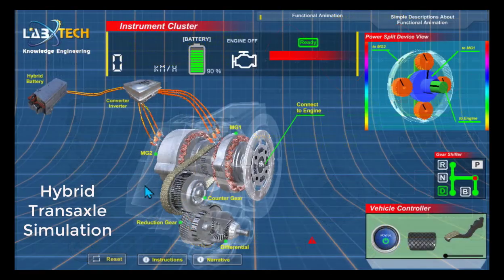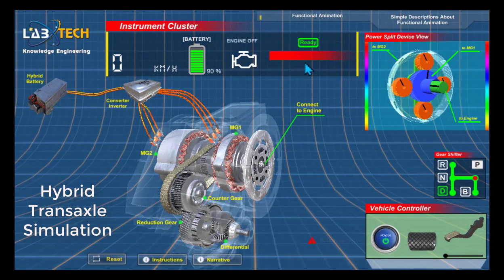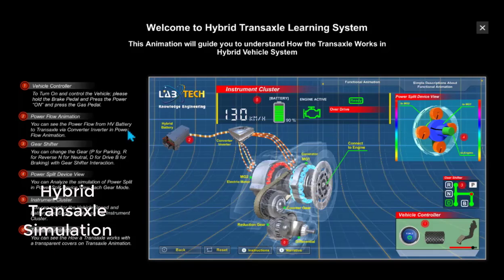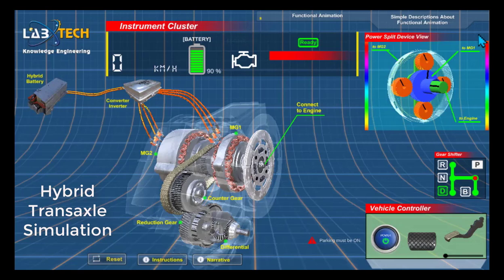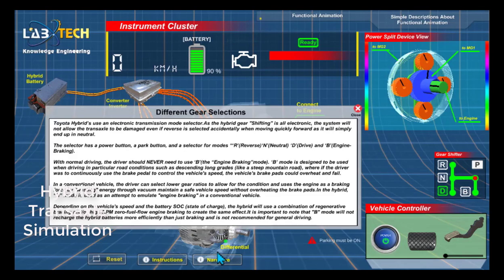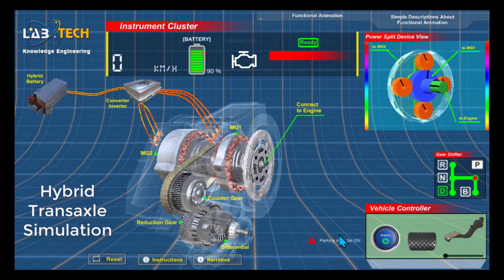This one is from our hybrid series, which is one of our newer parts of the series. It shows the hybrid transaxle simulation. Here we are able to look at the narrative and instructions, as well as the controls of the brake pedal, start button, shift, and accelerator pedal which will control it. So we can animate this.